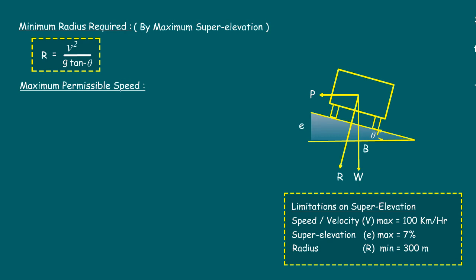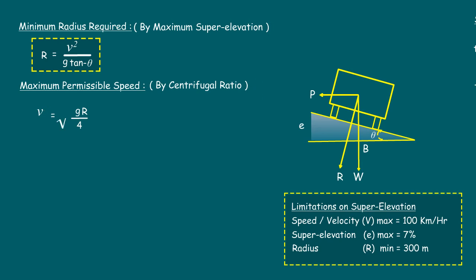Next, we will see how to calculate the maximum permissible speed. We already know the centrifugal ratio, and the ideal ratio for roads: P/W equals v²/gr, and the ideal ratio equals 1/4. Now, v² equals gr/4. Finally, v equals the square root of gr/4.